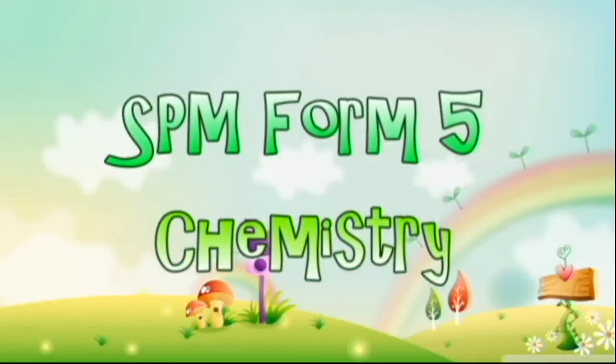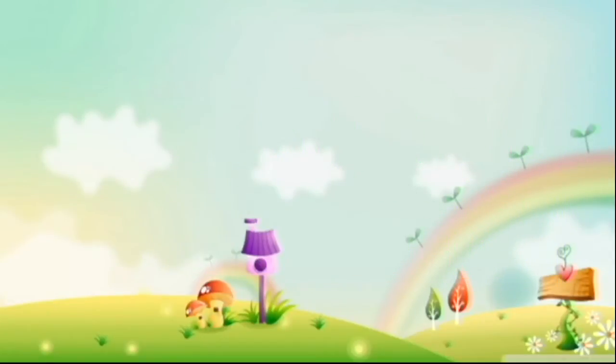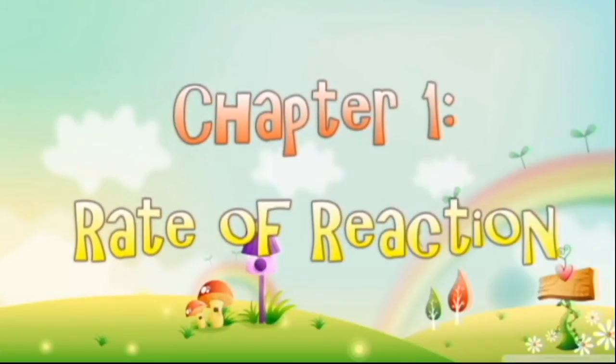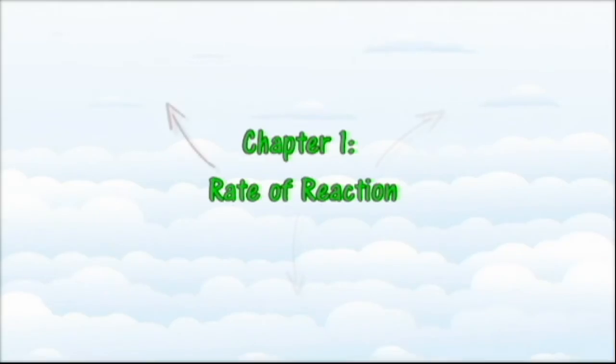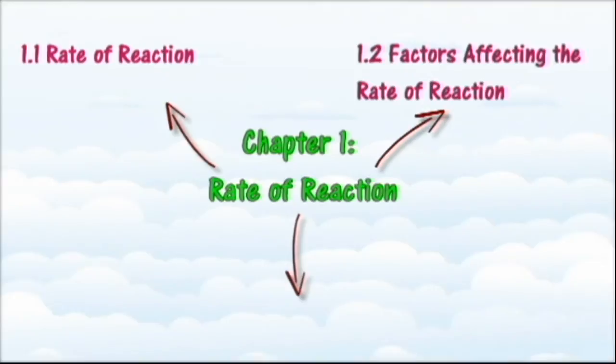SPM Form 5 Chemistry Chapter 1: Rate of Reaction. In this video we will summarize the expected learning outcomes of Chapter 1, Rate of Reaction, in the form of a concept map. In this chapter we will learn more about the speed at which a reaction happens. There are three main sections in this chapter: 1.1 Rate of Reaction, 1.2 Factors Affecting the Rate of Reaction, and 1.3 Collision Theory.